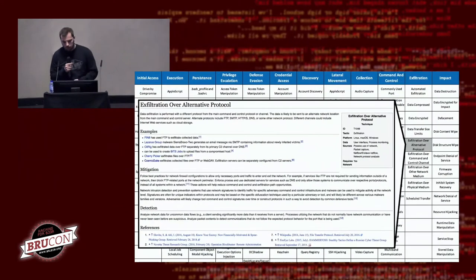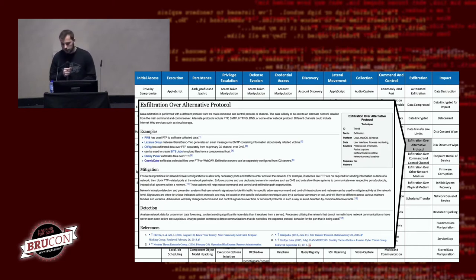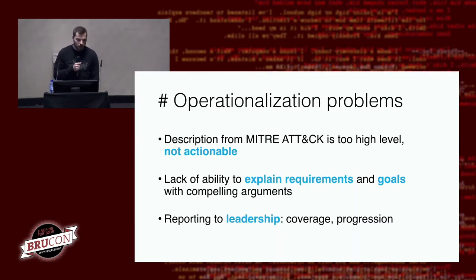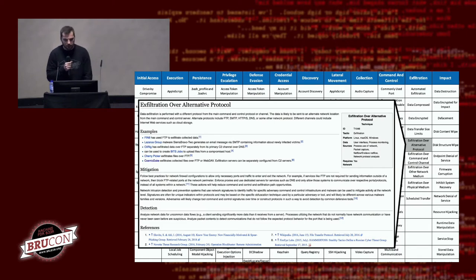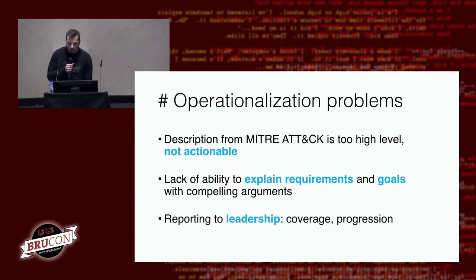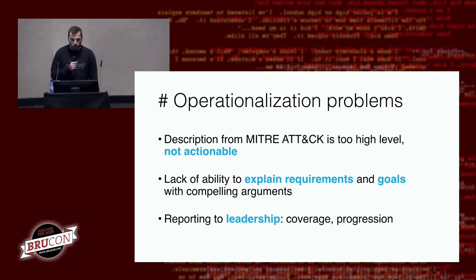This is a sample technique — exfiltration over an alternative protocol. We have a description, some examples of usage, and a high-level description of mitigation and detection for this specific technique. However, there are operationalization problems. The description from MITRE ATT&CK is too high-level and not actionable — you cannot simply take this page, pass it to your team, and ask them to detect or mitigate these activities. A consequence of this is the lack of ability to explain requirements: it does not tell us exactly what to configure, how to configure it, or where.